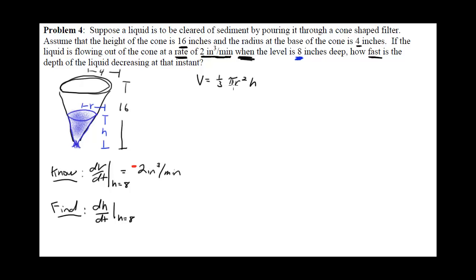Now I want to take the derivative of this equation, but there's an issue. I have two functions, r and h, so using the product rule would give me both dr/dt and dh/dt — two unknowns. That's a problem. If they had given me dr/dt it wouldn't be an issue, but they didn't. So I need to get r in terms of h. There's a standard technique for the cone within a cone problem.